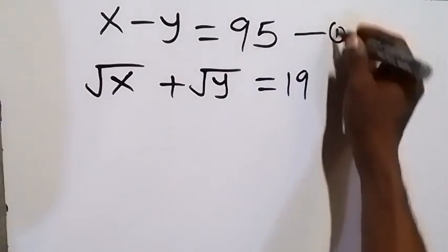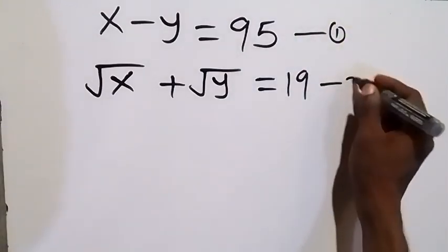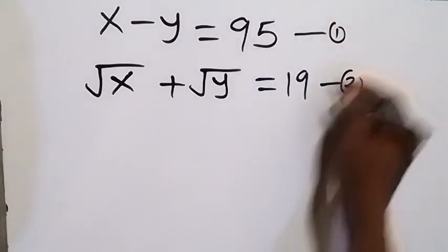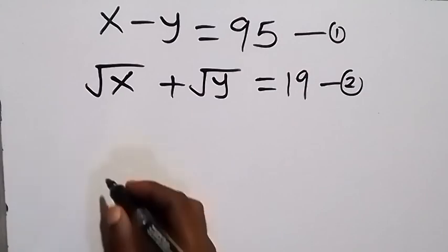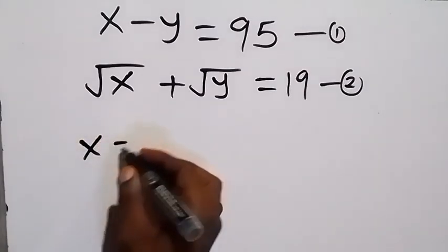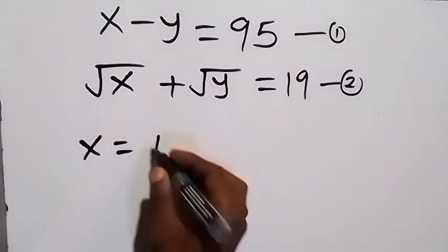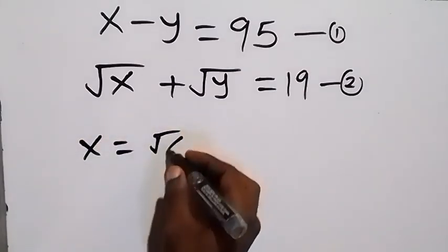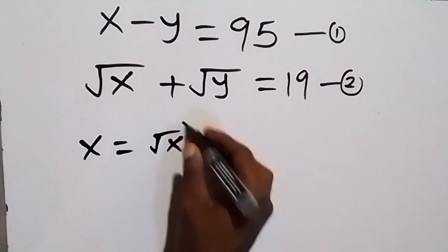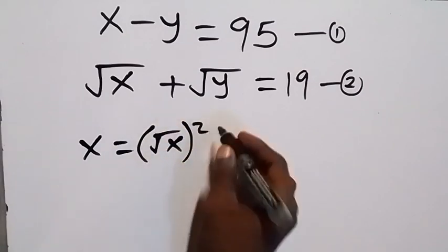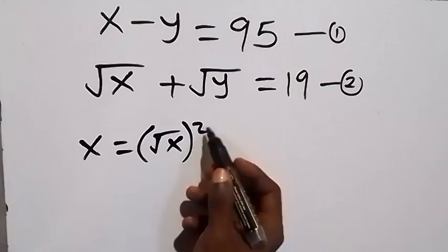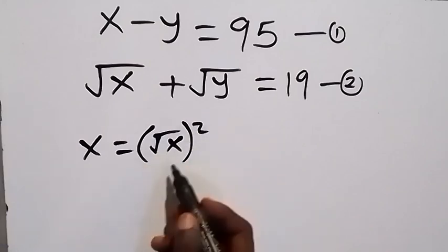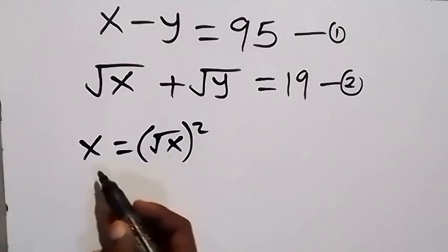Let's label this as equation one and this as equation two. Now let's note that x can be written as root x squared, because the square will cancel the square root and it will still be the same thing as x.